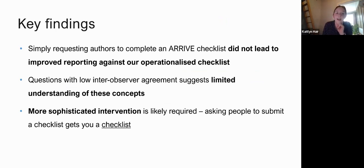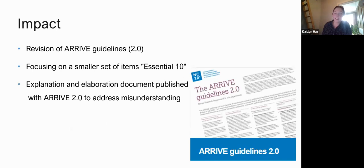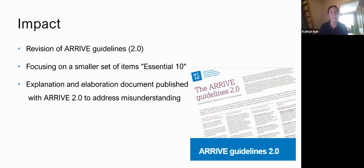The key findings were that simply requesting authors complete an ARRIVE checklist did not lead to improved reporting against our operationalized checklist. We identified questions with low inter-observer agreement, suggesting limited understanding of some concepts. Overall we think a more sophisticated intervention is required — asking people to submit a checklist got us a checklist but didn't get us improved reporting. This study has directly informed the revision of the ARRIVE guidelines: they were revised in 2020.